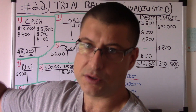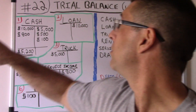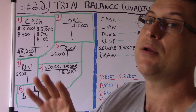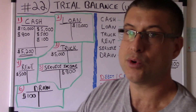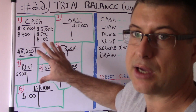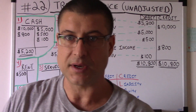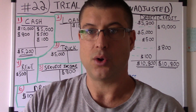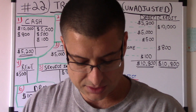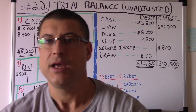Earlier, in Accounting for Beginners number 21, we took journal entries and did a T-account example. So if you're wondering where these accounts came from, they're T-accounts — watch number 21 if you haven't seen it yet. This is the unadjusted trial balance, and that matters because there is also an adjusted trial balance and a post-closing trial balance.